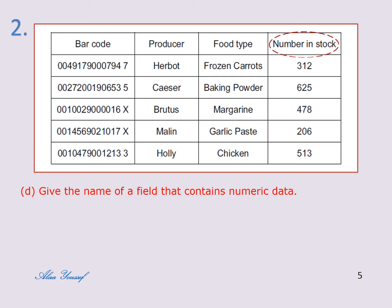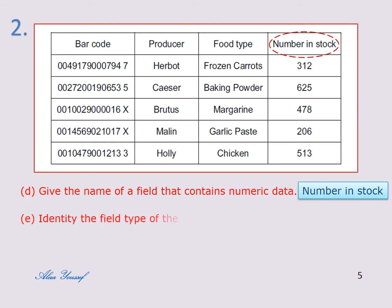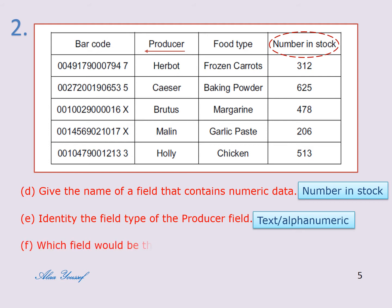E) Identify the field type of the producer field. The answer is text or alphanumeric. F) Which field would be the key field? The answer is the barcode field.